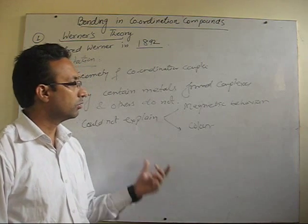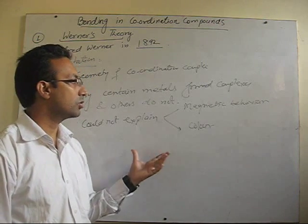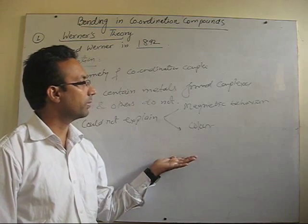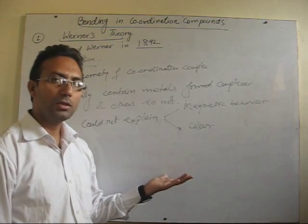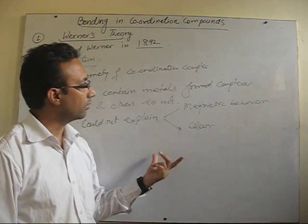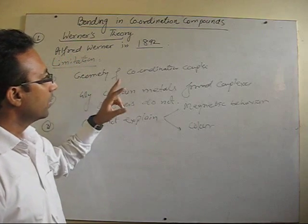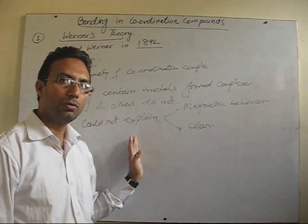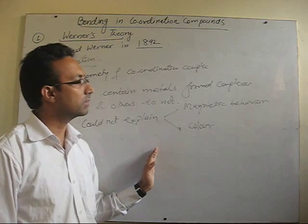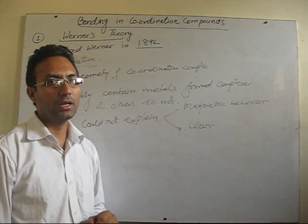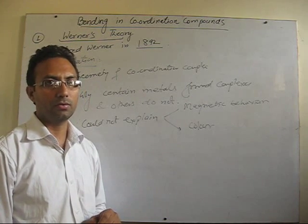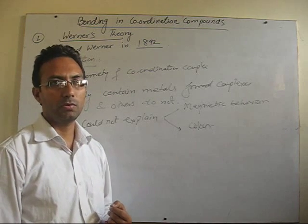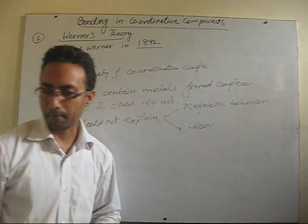To explain these points further, we have different theories like valence bond theory, crystal field theory, molecular orbital theory, and ligand field theory. We will mainly discuss two theories: valence bond theory and crystal field theory. So the next topic will be valence bond theory.